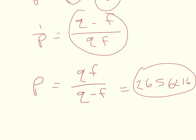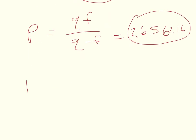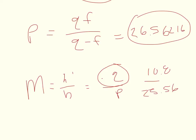Now I want to know the magnification. Magnification is equal to H prime over H which is equal to negative Q over P. My Q is already negative so that's going to turn that term positive and I get basically positive 10.8 over 25.56 and so my magnification is equal to 0.4.